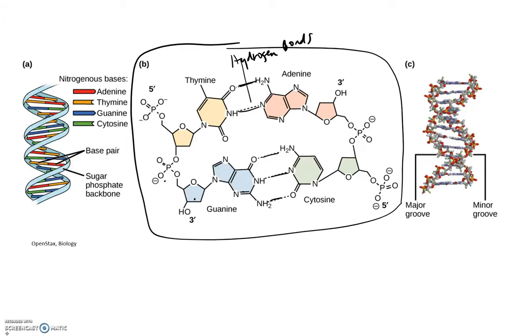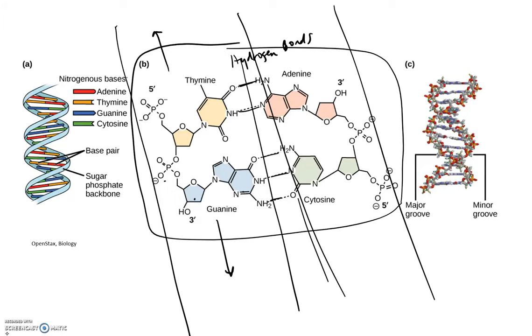What I want you to see is this would be one strand of DNA. So we only show two bases, but the next base could continue on this direction, right? And we could have another base this direction, or another nucleotide, excuse me. So this would be one long strand of DNA.